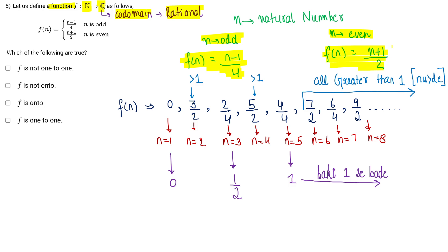I put values to analyze the function. So when n is 1 it's odd, so (1-1)/4 that comes out to be 0. When n is 2 that's even, I'll put the value in this one, that is (2+1)/3 that is 3/2. So this is what I have done.